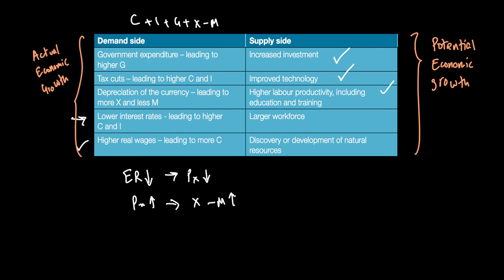Similarly, higher quantity of workforce, which means a larger workforce, can happen through immigration into the country or, for example, better policies by the government which encourage people to work. This can cause supply side improvement and cause LRAS to shift to the right or PPC to shift to the right.